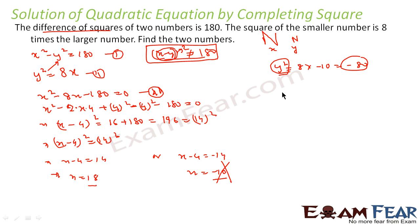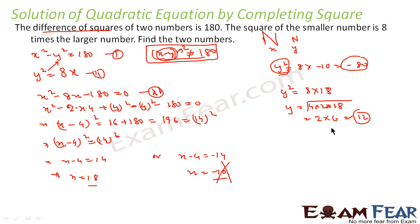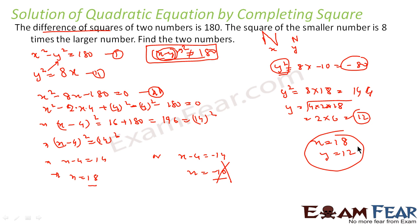With x = 18, y² = 8 × 18 = 144, so y = 12. The larger number is x = 18 and the smaller number is y = 12. The tricky part of this question was getting x = −10 and recognizing it must be rejected because substituting it gives y² = −80, which is impossible for real numbers.